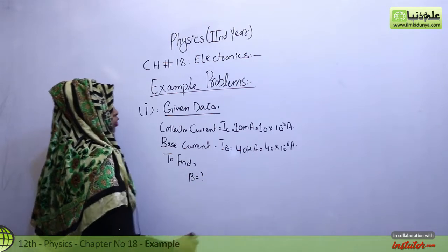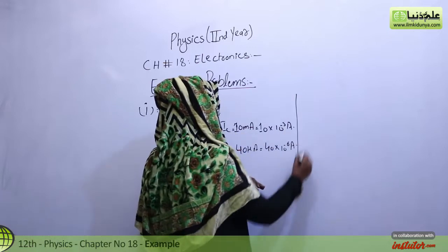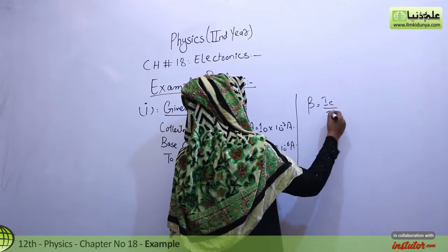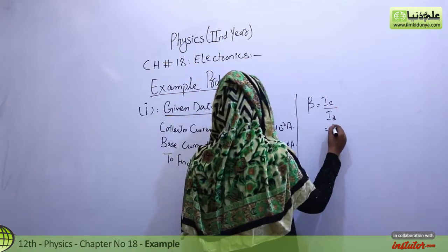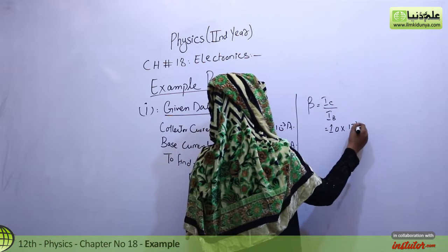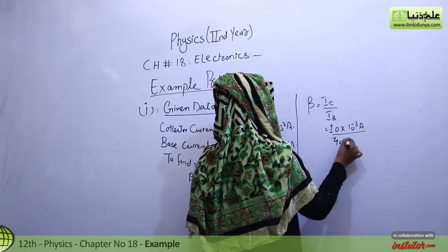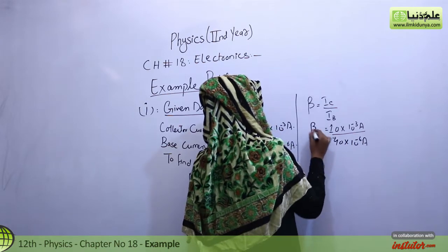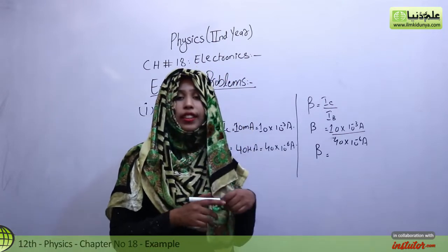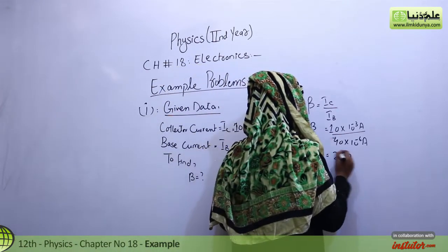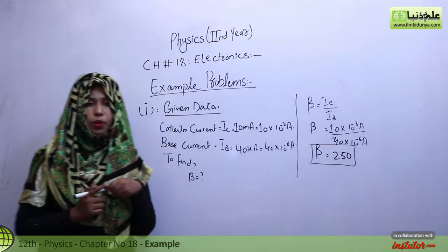So what do we need to find? Beta gain factor. What formula do we need to use here? We know that gain factor, beta, is equal to IC over IB. So IC is 10 into 10 raise to power minus 3 amperes divided by 40 into 10 raise to power minus 6 amperes. Beta, which we have to find by the help of the calculator, that will be equal to 250. This is our example problem number 1.